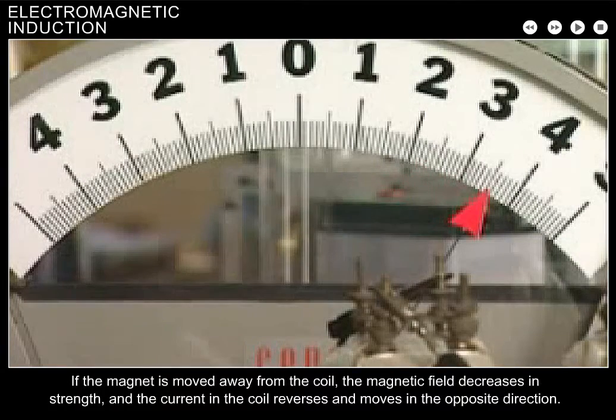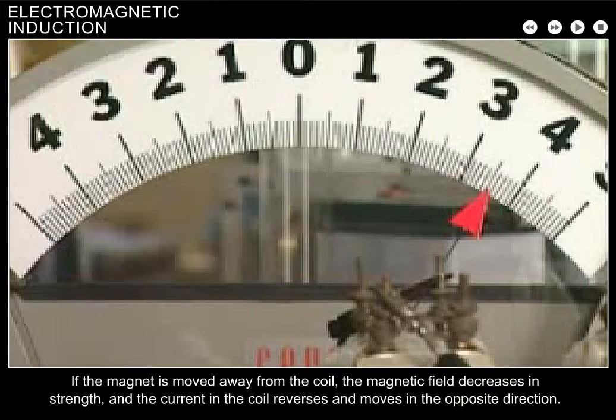If the magnet is moved away from the coil, the magnetic field decreases in strength, and the current in the coil reverses and moves in the opposite direction.